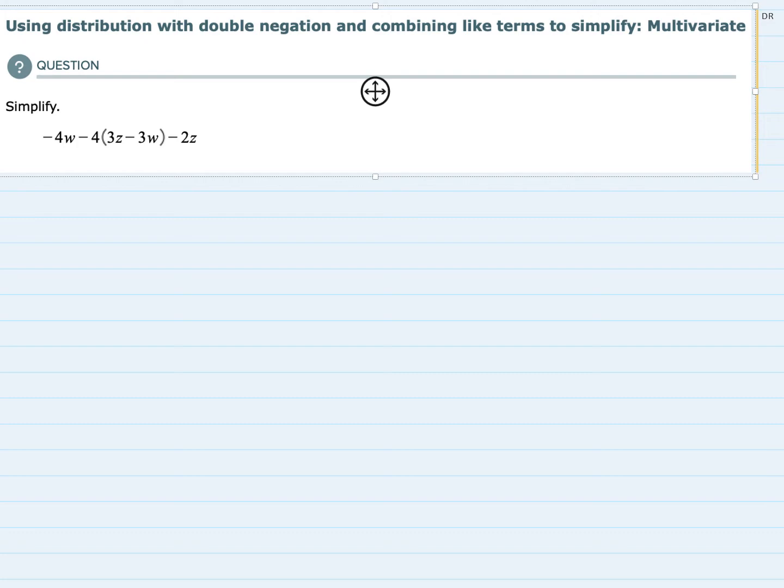So I'm just going to work my way down, doing the steps that are available to me as they arise. So the first term here is a minus 4W. Nothing to do there, at least for now. I'm just going to bring down minus 4W.